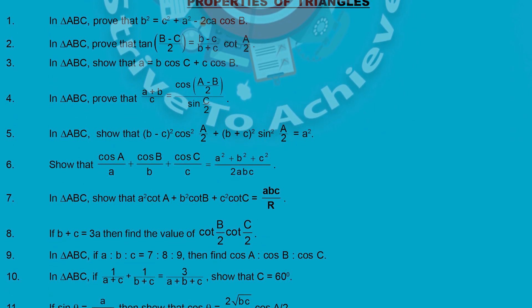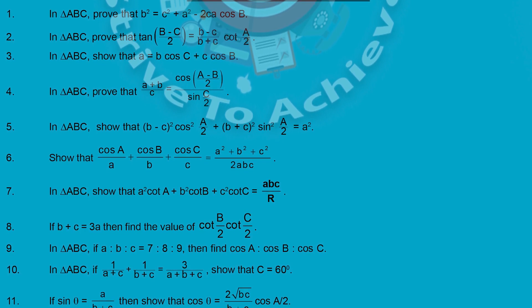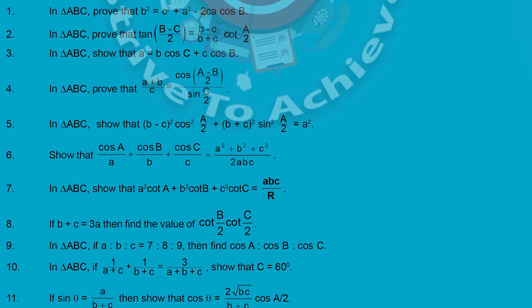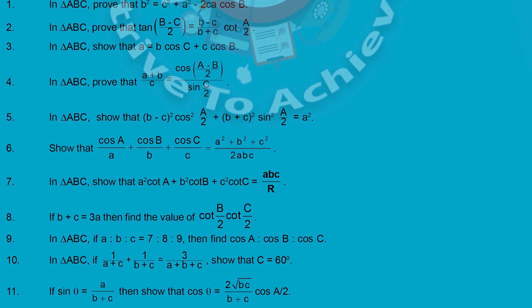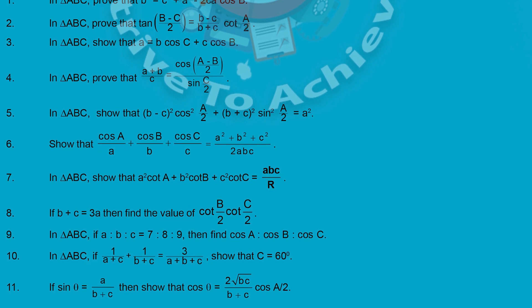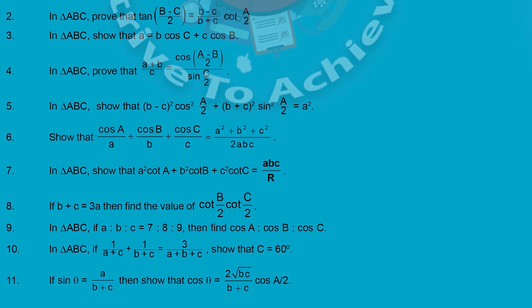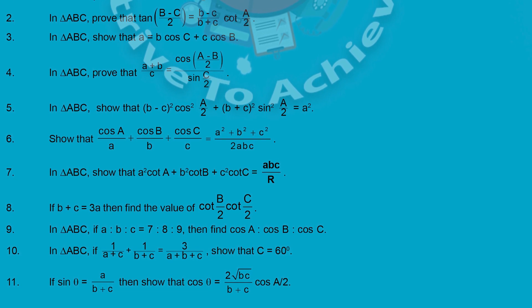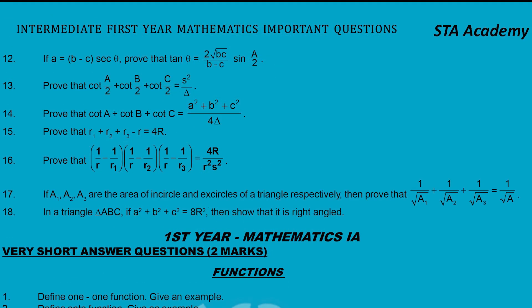Properties of Triangle is again a very important chapter. This chapter gives you one LAQ and one SAQ. The SAQ questions I have listed here are 11 SAQs, which gives maximum marks in your board exam and is also helpful for MSET. In total, for Properties of Triangle there are 18 SAQs — questions 12 through 18 are also very important.